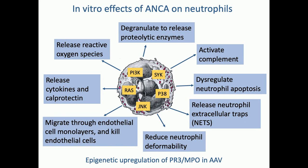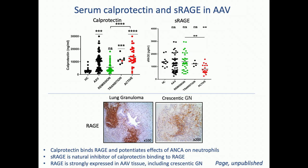What do ANCA do when they hit the neutrophil? When they're stimulated via various signalling molecules — including spleen tyrosine kinase, of which more later — they release cytokines and damage-associated molecular patterns like calprotectin, reactive oxygen species, and enzymes. They activate complement through the alternative pathway. Apoptosis is dysregulated; instead they undergo netosis and release neutrophil extracellular traps. They become less deformable, get stuck in small vessels, migrate across the endothelium, and can kill endothelial cells. All of this backs up the clinical data that ANCA are indeed pathogenic.